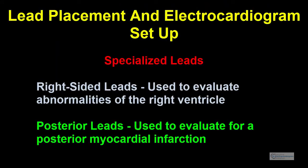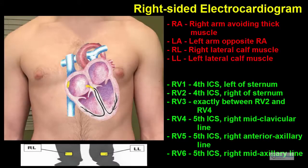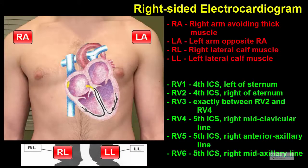Additional specialized leads can also be placed depending on circumstances. For example, a right-sided electrocardiogram may be performed to evaluate for abnormalities of the right ventricle. This is often done to detect a right ventricular myocardial infarction in the setting of an inferior myocardial infarction. In addition, a posterior lead may be used to evaluate for a posterior myocardial infarction. To set up a right-sided electrocardiogram, you first attach the limb leads as normal, but then put the chest leads opposite of normal and over the right chest.